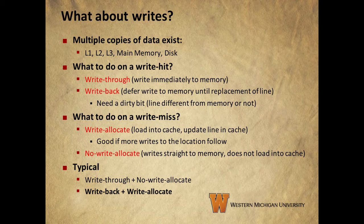On to write misses. One option is called write allocate, meaning we load the line we need to write into the cache and update it there — this works well if more writes are to follow. For example, in our sum-the-elements-of-an-array example from the locality section, we keep writing to the variable sum, so we keep updating sum in the cache and write it to main memory when that work is done. The other option is called no write allocate, which means we don't load anything into the cache and just write the data straight to main memory. Typically we see either a combination of write-through for hits and no write allocate for misses — meaning everything goes straight to main memory — or a combination of write-back and write allocate, meaning we use the cache to defer writes to main memory.